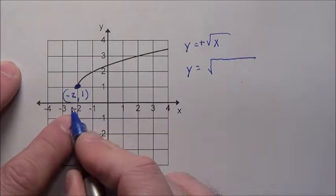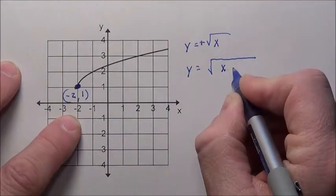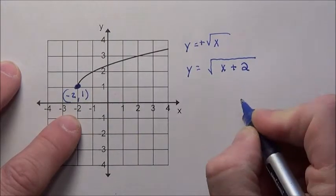What did we do to the x? We slid over to negative 2. So remember, we're always going to do the opposite. Instead of writing minus 2, we're going to put plus 2 right here.